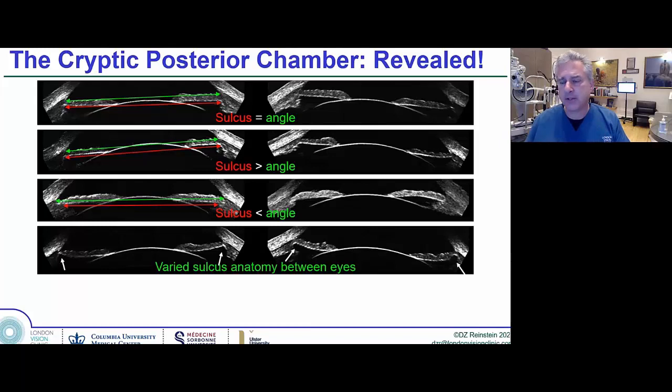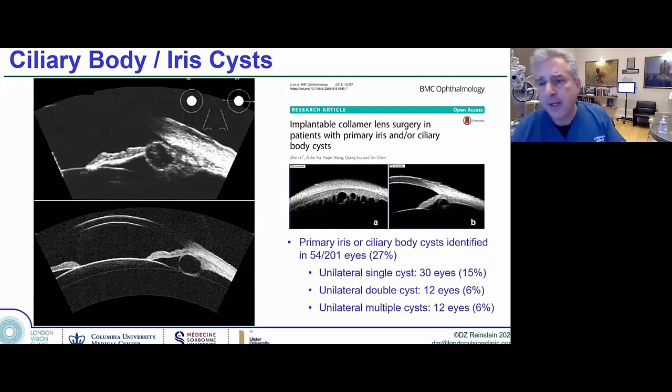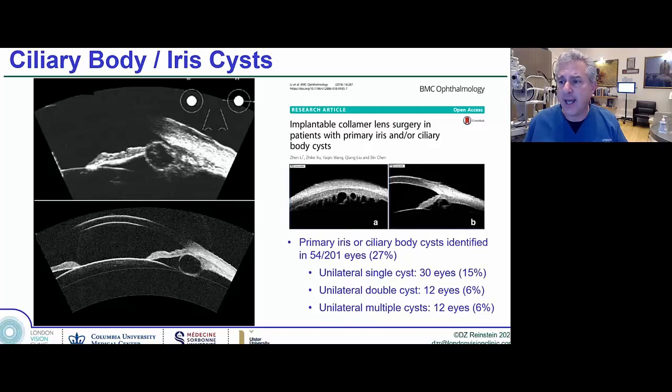There can be different sulcus anatomy and not just within patients, but between the eyes of the same patient. Here's a patient with some kind of sulcus recession anatomy on one side but not the other. The variant anatomy of the sulcus is important to understand. Iris cysts are very, very common. They're way more common than you think. Now that we scan everyone pre-op, we're finding these everywhere.